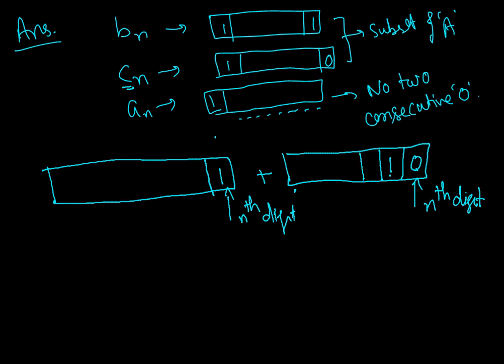Just before that, you can have 0, you can have 1, there is no problem. So if I am ensuring that up till here there is no two consecutive zeros, the number of all such numbers is a_{n-2}.